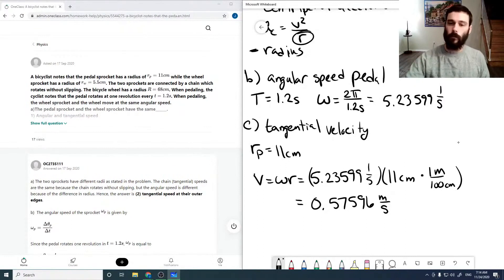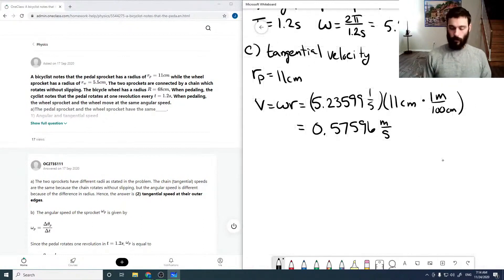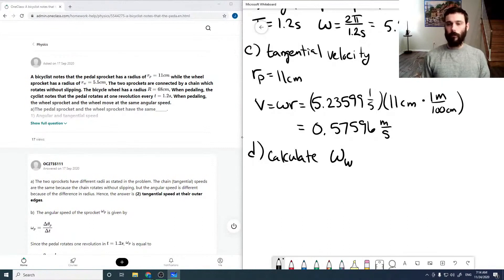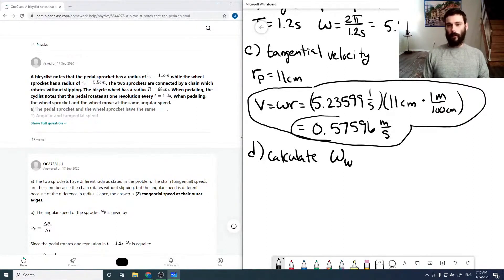And then D is to calculate the angular frequency of our wheel. So, remember in part A, we said that the tangential velocity of the wheel and the pedal sprocket are the same, meaning that is our tangential velocity. So that means we can use our V equals omega R expression, but we'd rearrange for our omega, so omega is V over R.